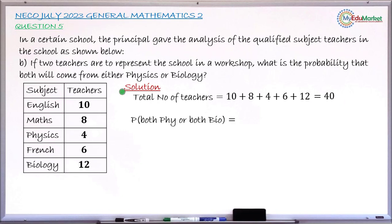So, probability of both either Physics or both Biology, this is a mutually exclusive event. So, what I'm going to do is probability both Physics plus probability both Biology. Happening of both Physics teachers or both Biology is a mutually exclusive event. So, we now add their probabilities. You need to find both the probabilities. That is, first selected is a Physics teacher, second selected is also a Physics teacher.